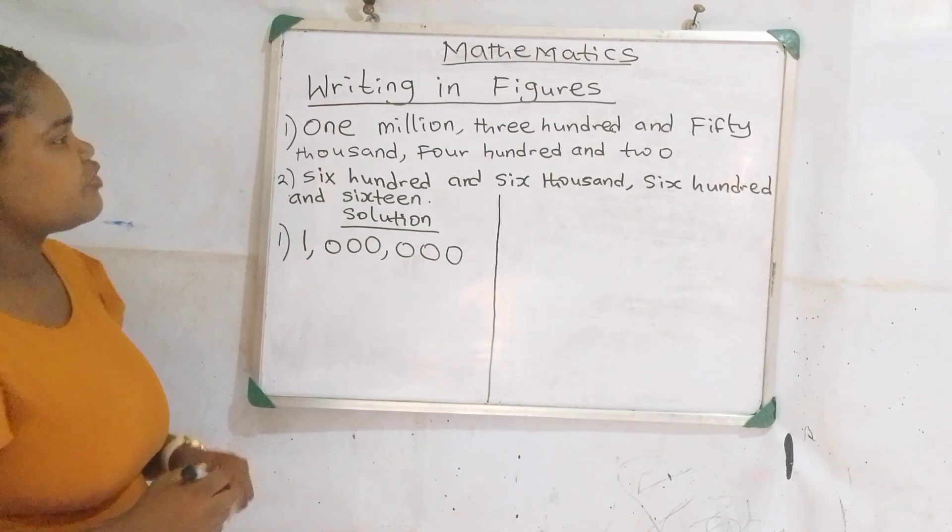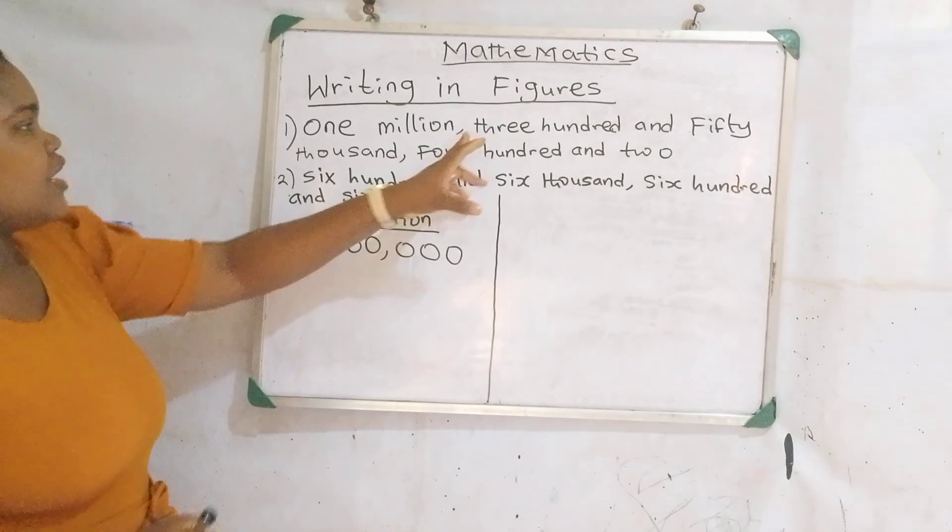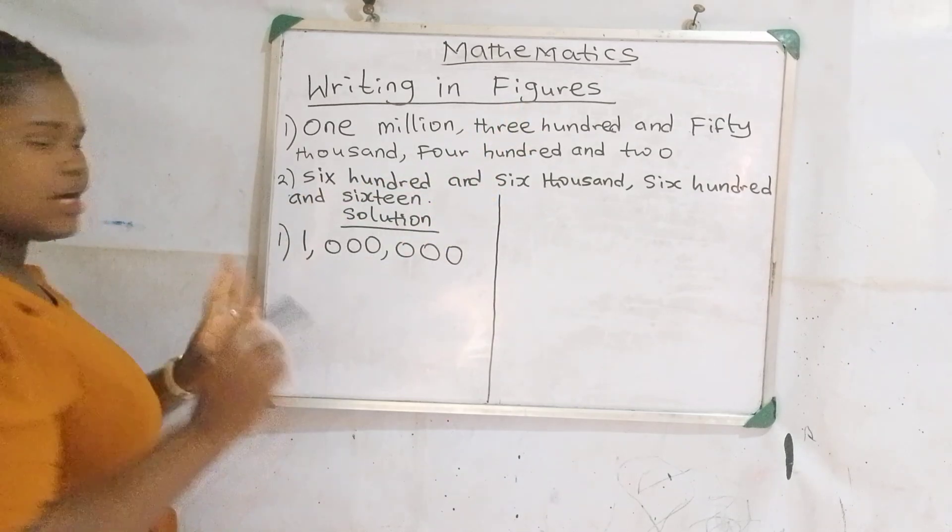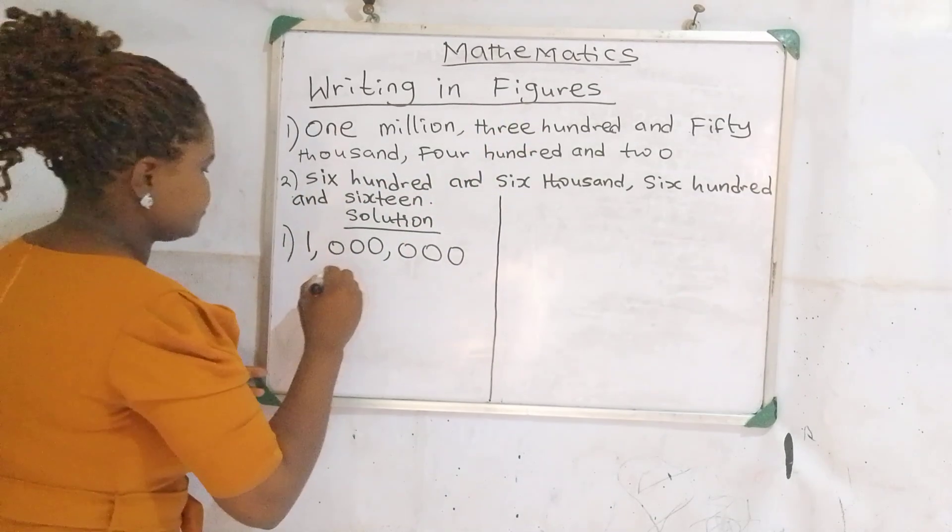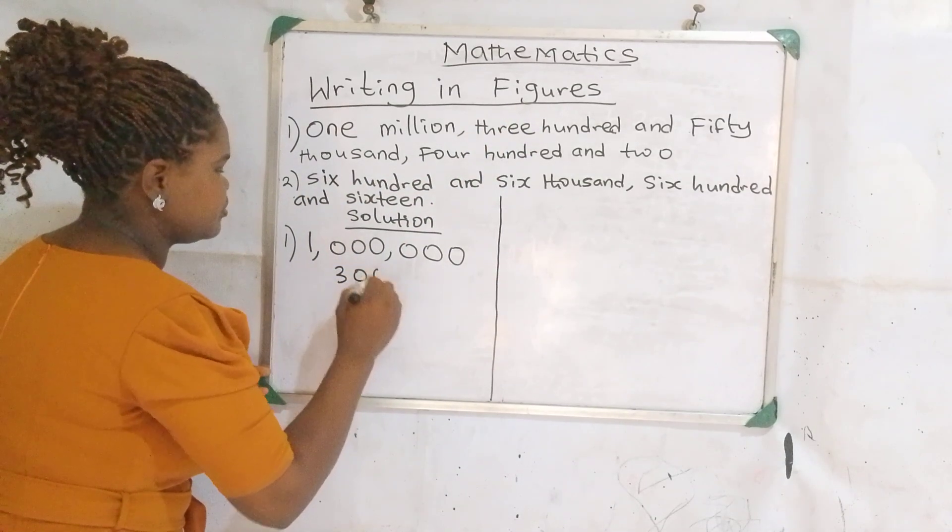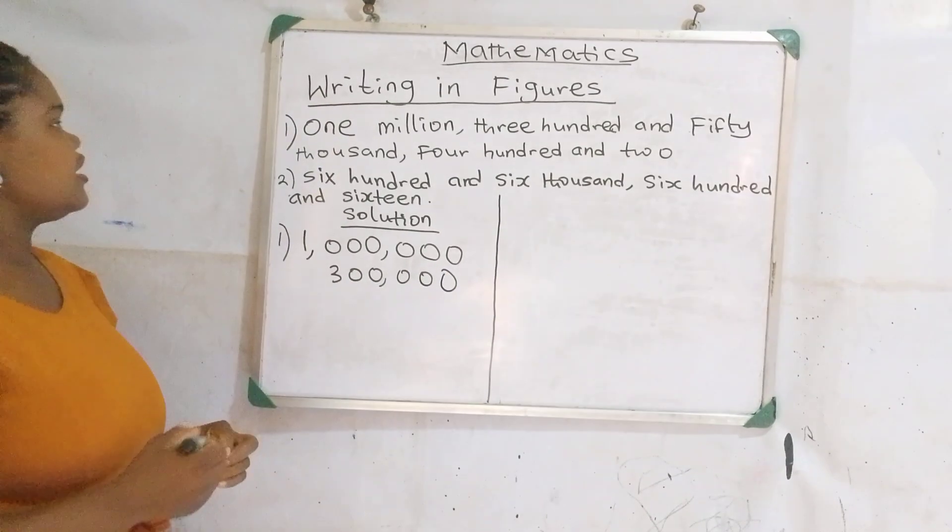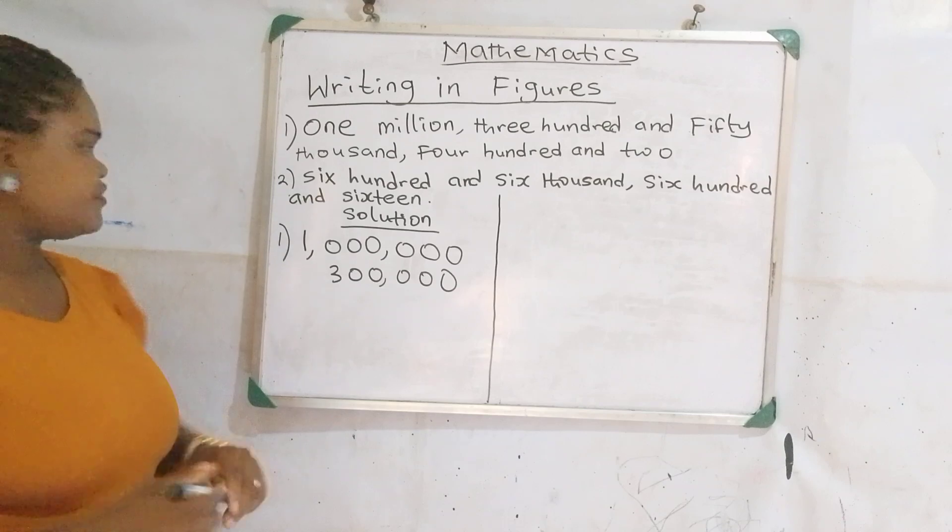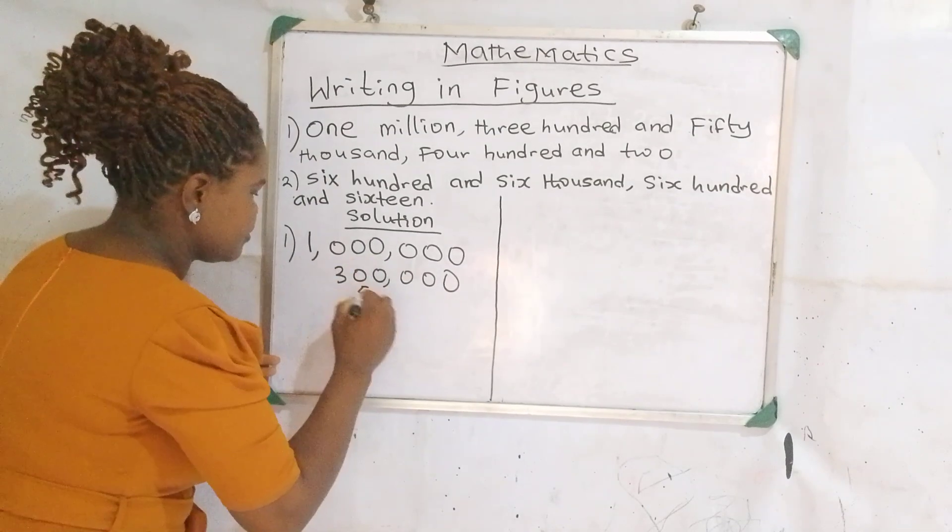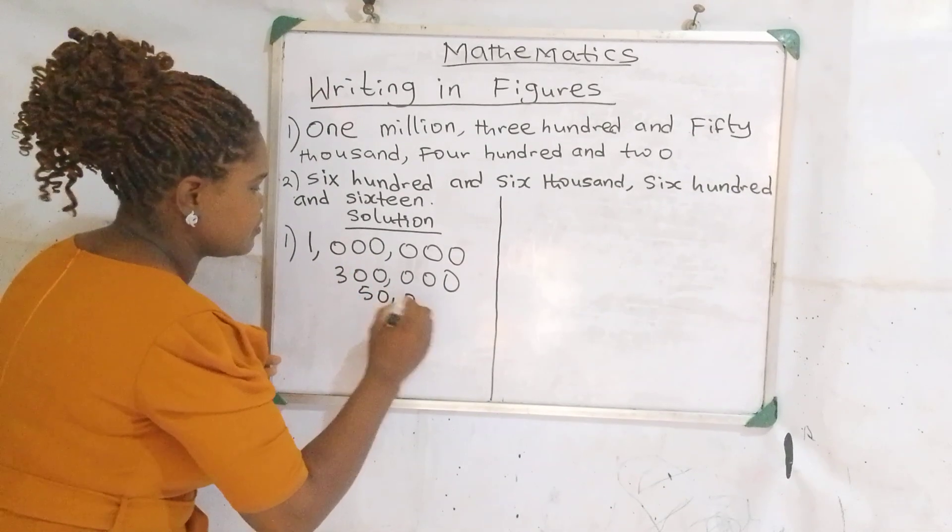They said 350,000. Now let's take the 300,000. How do we write 300,000? 300,000. The next one is 50,000. How do we write our 50,000? This way. 50,000.